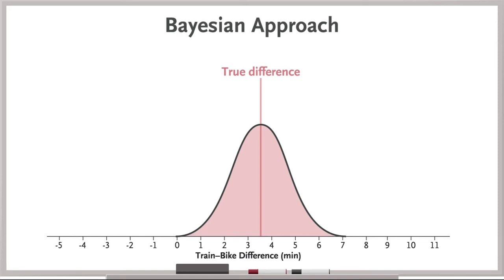Since the true difference is a random variable, it will have a distribution. In the Bayesian approach, you determine that distribution, which is referred to as the posterior distribution.